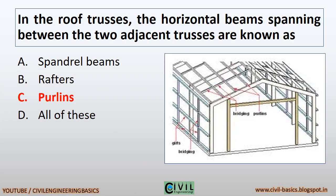In roof trusses, the horizontal beams spanning between two adjacent trusses are known as purlins. You can see the purlins in the given diagram.